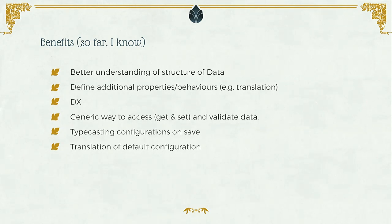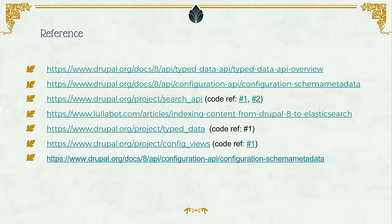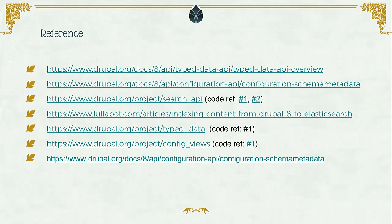The default configurations are provided out of the box via the config translation module. Code references are included so you can see exactly where config schema and type data are used on different projects. The Lullabot article is an amazing one if you want to read more, and the Drupal.org documentation is also very good. Both type data and config schema are massive, powerful systems in core, but I believe they're not explored that much — if you explore them, you'd be able to do a lot of amazing things.